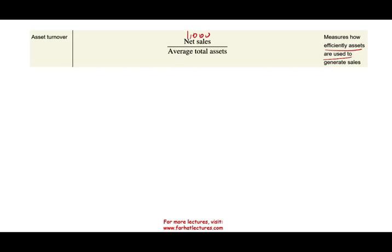The conversion period gives you a complete picture of how long it takes the company to go from cash to cash — from the time they buy the inventory until the time they sell it and collect. The last ratio is asset turnover, computed by taking net sales divided by average total assets. This tells us how efficiently assets are used to generate sales. For example, total sales of $1,000 and average total assets of $10,000 gives an asset turnover of 0.1, meaning for every dollar in assets you're generating 10 cents in sales.